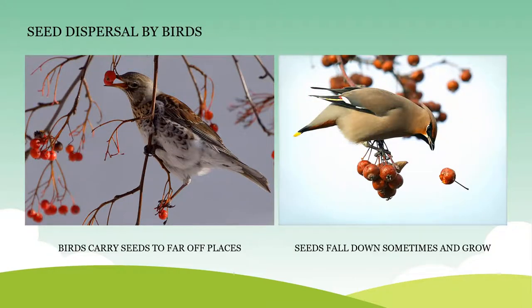Seed dispersal by birds. Birds carry fruits or seeds with their beak. While they are flying, seeds might fall down and grow into new plants. In this way, birds help in seed dispersal by carrying seeds to distant places away from the parent plant. Birds like crow, bulbul, and myna eat fruits like neem, digest the outer fleshy part of the fruit, and leave the seeds in their droppings. Those seeds then develop into new plants.